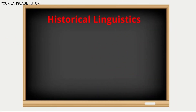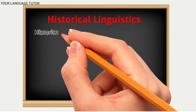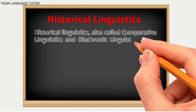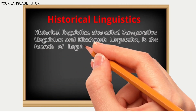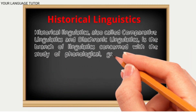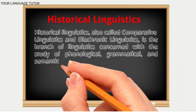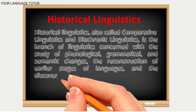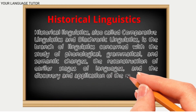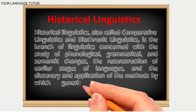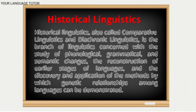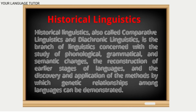Historical linguistics is also called comparative linguistics or diachronic linguistics. It is a branch of linguistics concerned with the study of phonological, grammatical, and semantic changes, the reconstruction of earlier stages of language, and the discovery and application of methods by which genetic relationships among languages can be demonstrated.